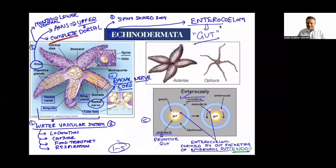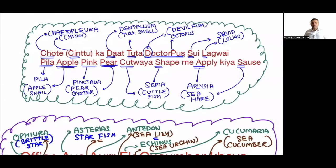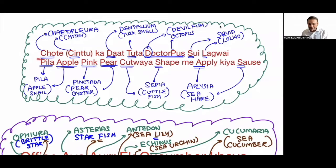Echinodermata trick expanded: 'Office aaya aur cucumber khaya, Biology is my first living university.' Office = Ophiura (brittle star, B = brittle star), Aaya = Asterias (starfish), A = Antedon (sea lily, L = lily), Cucumber = E for Echinus (sea urchin, U = urchin), Cucumaria (sea cucumber, C = sea cucumber).